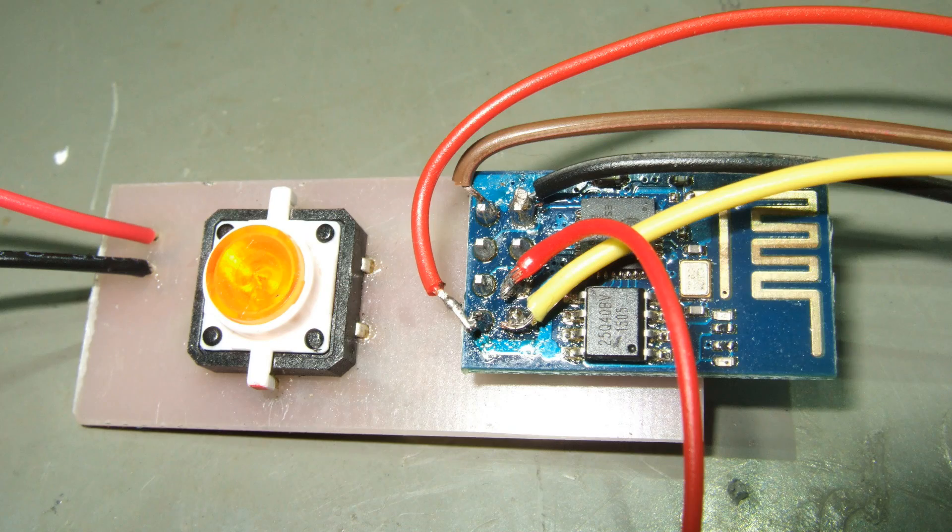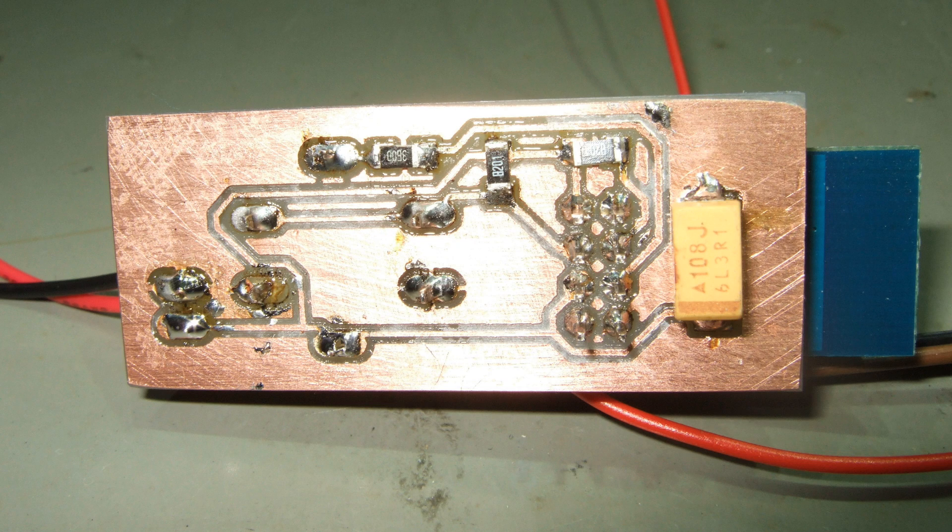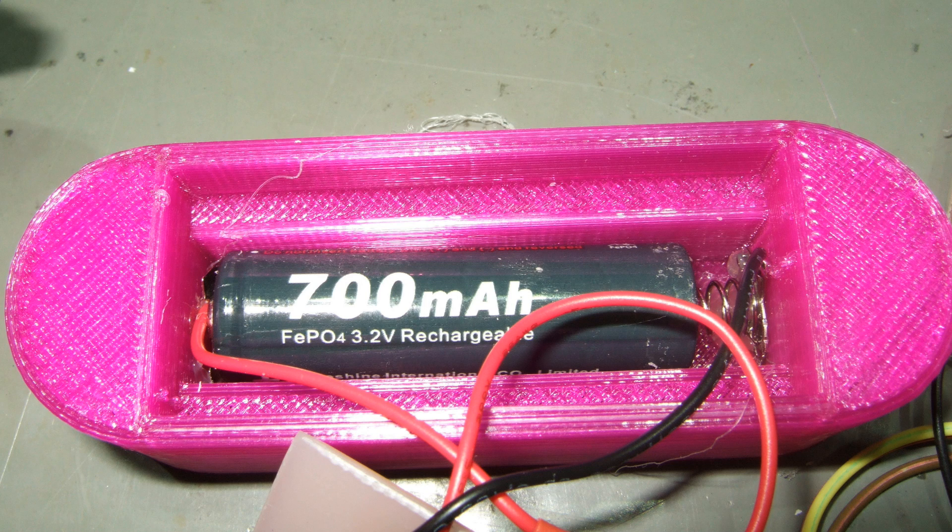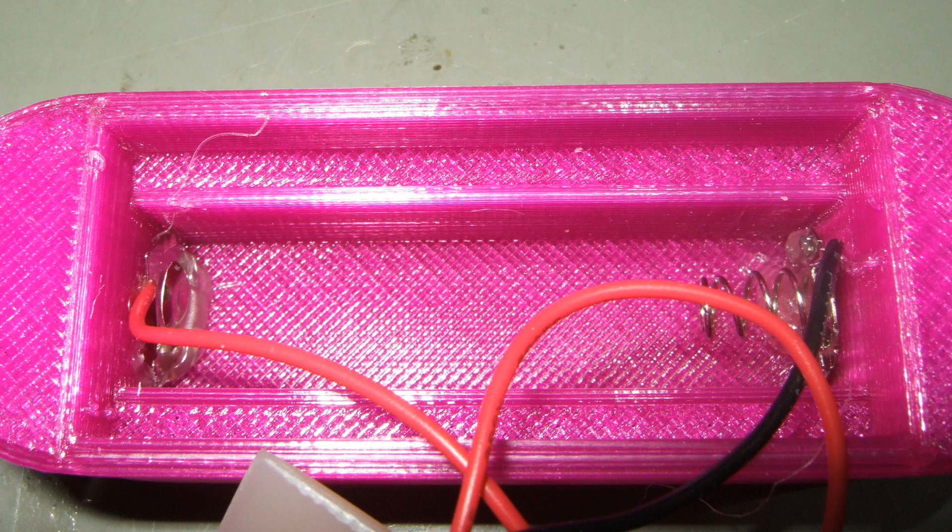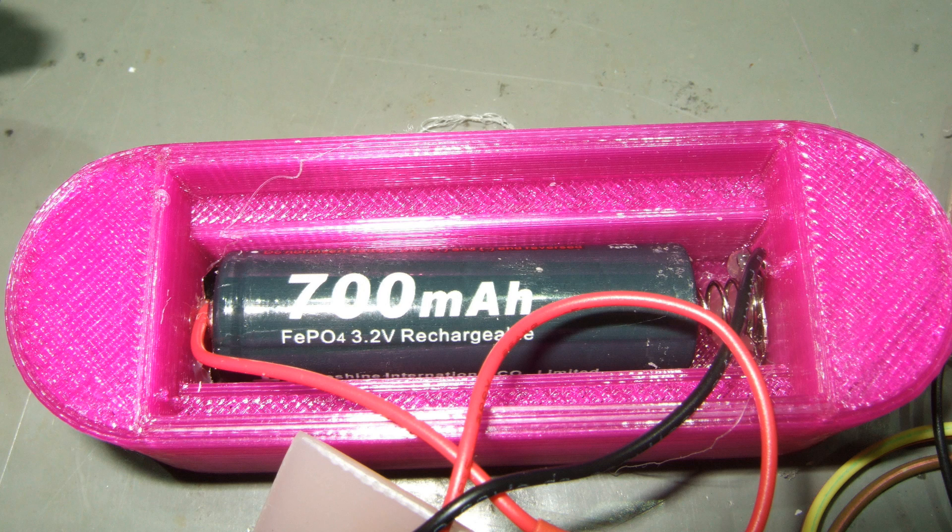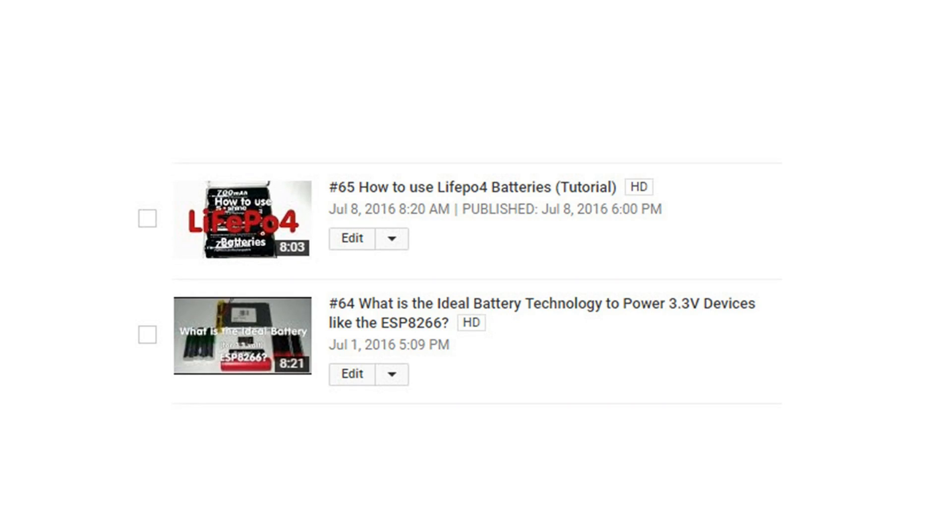Then I soldered the ESP-01, the button and the resistors to this PCB. Of course, I added also a decent capacitor. As a last step, I printed a small box. In the base of the box, I hot glued battery contacts from another battery holder. I use a LIFE-EPO4 battery to power the thing. If you do not know why this is ideal, watch my videos about battery types for small devices.